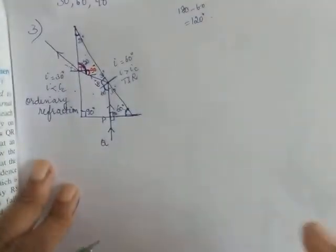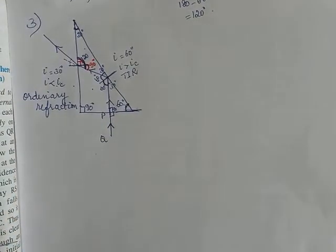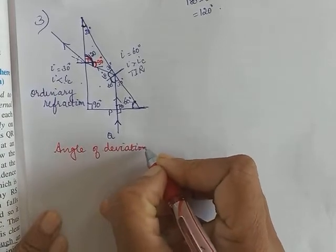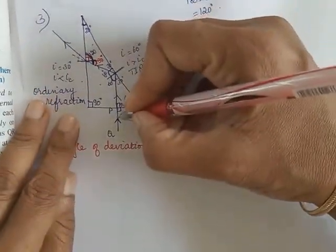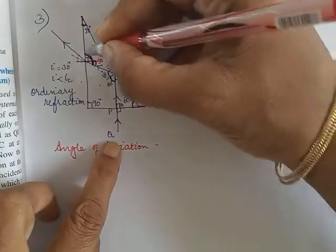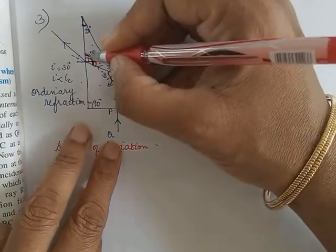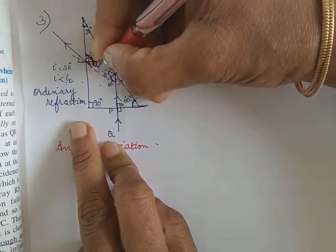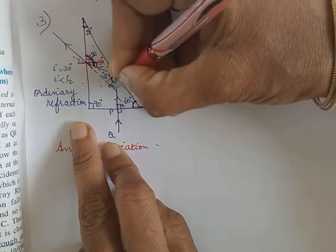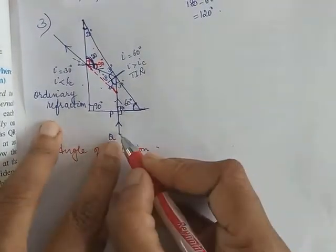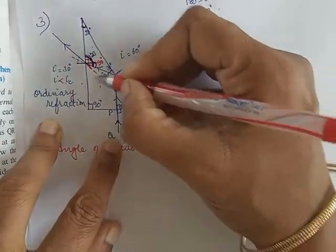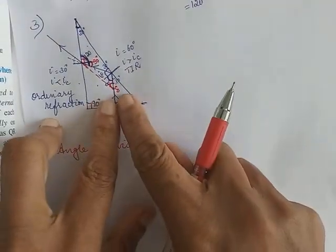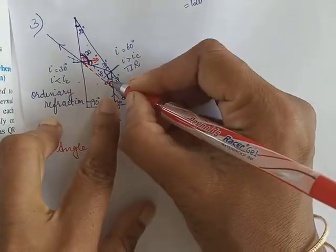Now we calculate the angle of deviation — by what angle has the incident ray been deviated? Without the prism, the ray would have gone straight. Extend the emergent ray and make it meet the original incident ray direction. The angle between them is the angle of deviation.